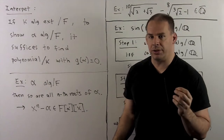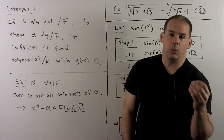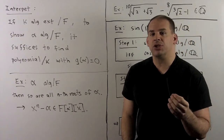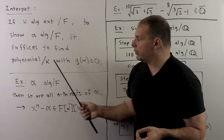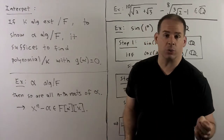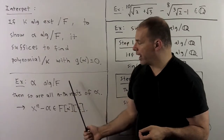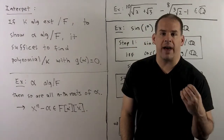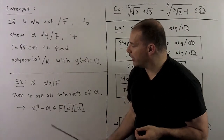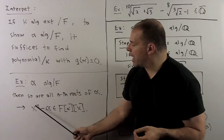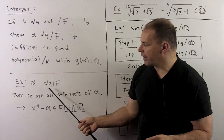Here's a useful interpretation of the theorem. If k is an algebraic extension of f and we want to show that alpha is algebraic over f, it's enough to show that alpha is algebraic over k — we look for a polynomial with coefficients in k with alpha as a root. For example, if alpha is algebraic over f, then so are all nth roots of alpha. These elements are all roots of the polynomial x to the n minus alpha, which has its coefficients in f adjoin alpha. So these are all algebraic over f.